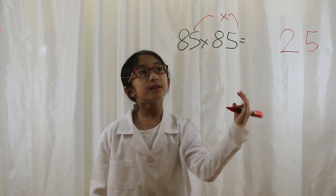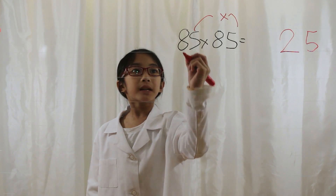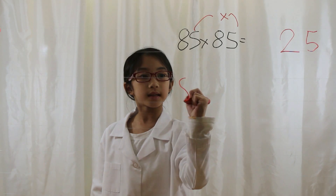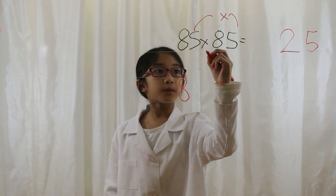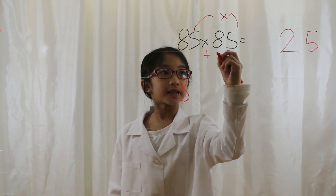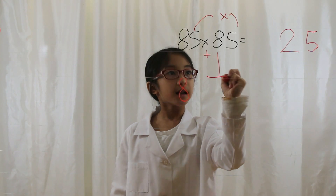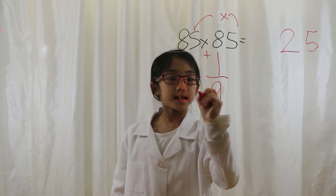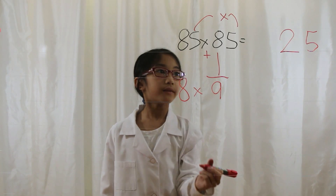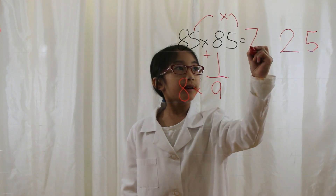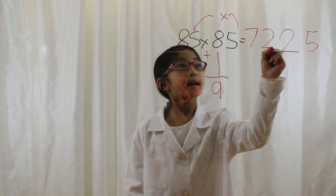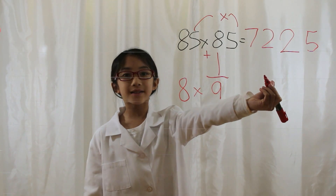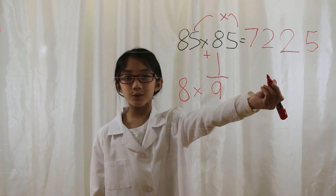Next, you look at the tens digits. You bring the first tens digit down, which is 8, and then you add a 1 to the second tens digit. 8 plus 1 is 9. 8 times 9 is 72. You put a 72 at the front. 85 times 85 is 7,225.